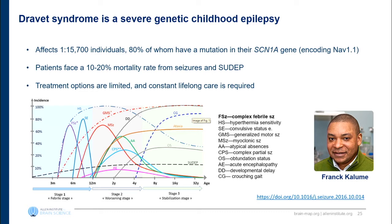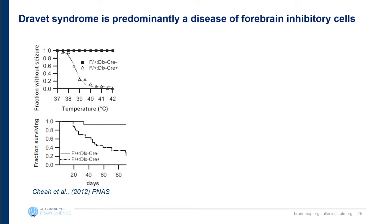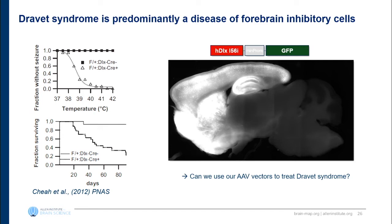One of the hallmark indications of Dravet syndrome is complex febrile seizures in the first year of life. We've been working with collaborator Frank Colume, an expert at Seattle Children's, to advance a gene therapy using our AAV system. Dravet syndrome is one of the few brain diseases well modeled in mice — you can delete a single copy of SCN1A specifically in inhibitory neurons, causing mice to get strong complex febrile seizures at around 39 degrees with high mortality. We think Dravet syndrome is predominantly a disease of interneuron cells, and we have great vectors to deliver things at high level to inhibitory neurons.